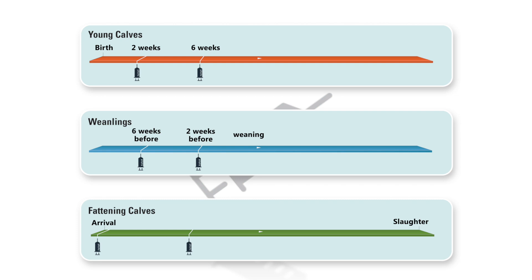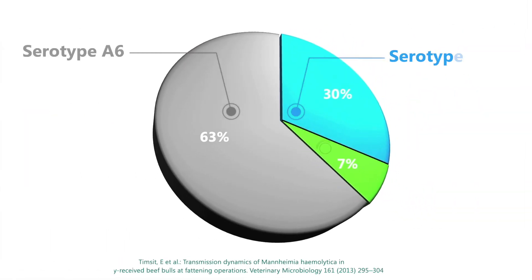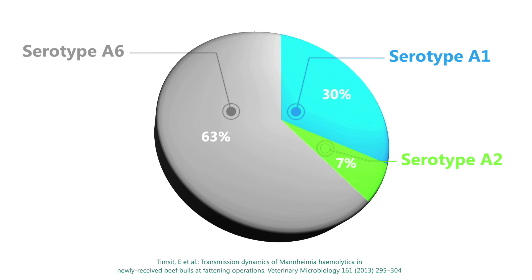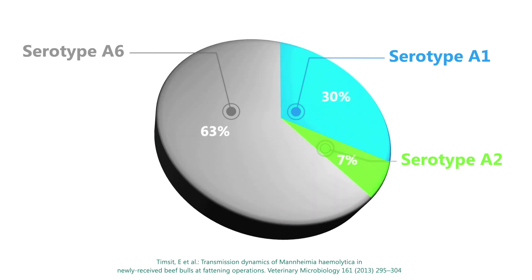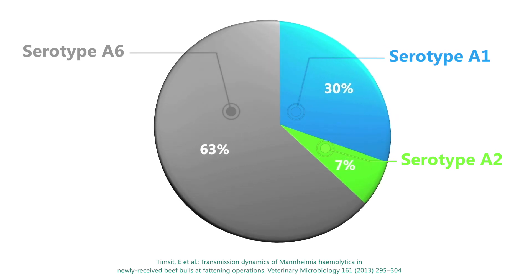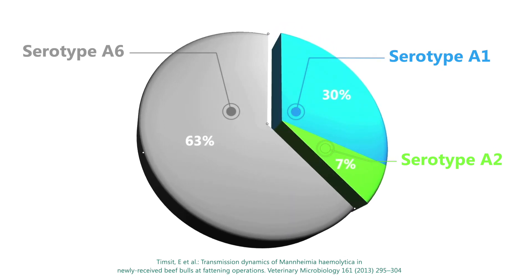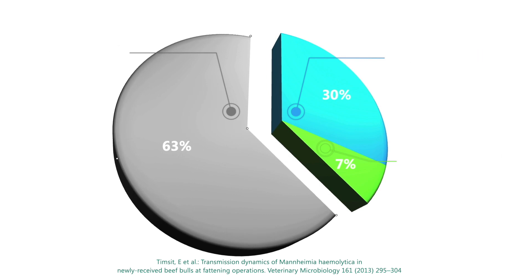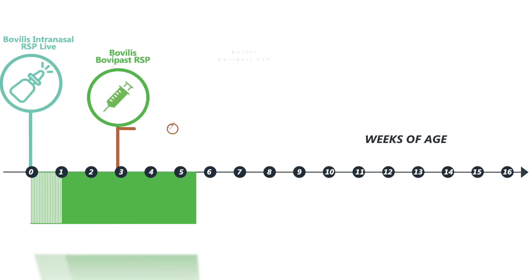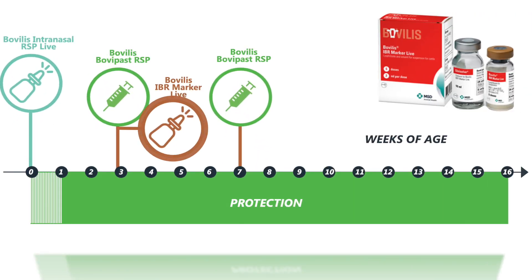Why should you consider using Bovilis Bovipast RSP? This vaccination provides the broadest protection on the market against Mannheimia haemolytica as it covers serotype A1 and A6. Serotype A6 should not be underestimated, as one study has shown that 63% of isolates were associated with serotype A6. Additionally, Bovilis Bovipast RSP has IRP technology and a concurrent use claim with IBR marker live, which can be administered on the same day as Bovilis Bovipast RSP.